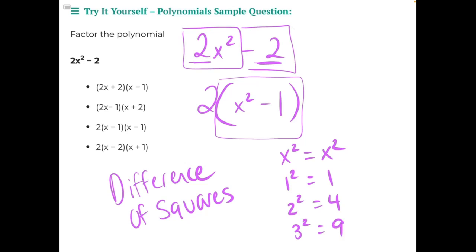So if you ever see a binomial like this where you see x squared minus 1, or x squared minus 4, x squared minus 9, or any other perfectly squarable number, then you are dealing with a difference of squares. And there's a special way that we can factor a difference of squares.